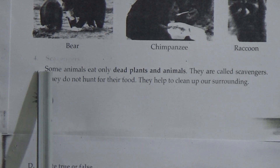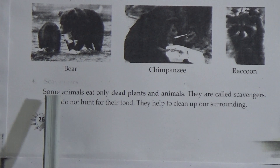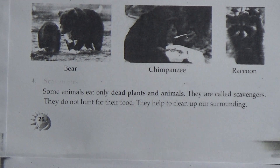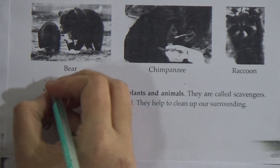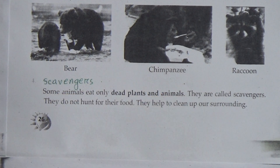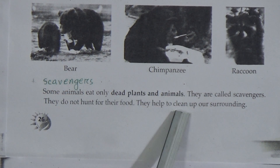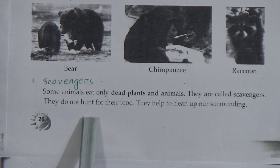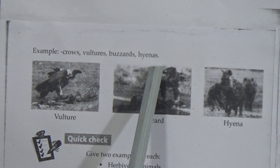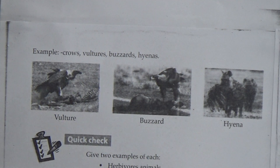Here is scavengers. Scavengers spelling is S-C-A-V-E-N-G-E-R-S. Some animals eat only dead plants and animals. They are called scavengers. They do not hunt for their food. They help to clean up our surrounding. Now come to page 27. Examples are crows, vultures, buzzards, hyenas. And here is the picture of vultures, buzzards, hyenas.